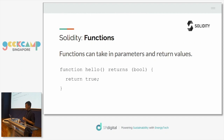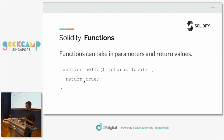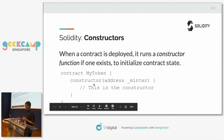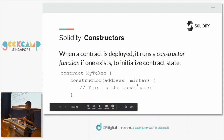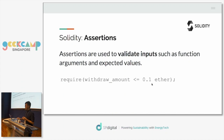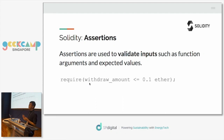Functions are pretty self-explanatory. For example, a function called hello with no parameters that returns a boolean and just returns true. Constructors are a special kind of function — like constructors in object-oriented classes, they take in some parameters and are used to initialize state in the contract. This constructor accepts an address labeled minter and the body might save or do something with that address. Assertions are used to validate inputs: you specify a boolean statement wrapped in a require block, and the function call will fail or continue depending on whether it evaluates to true or false.